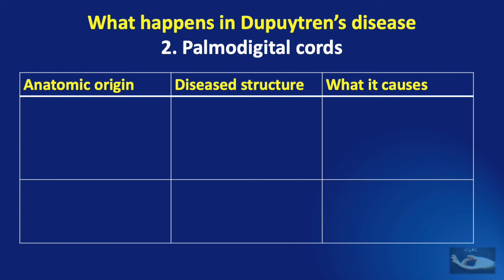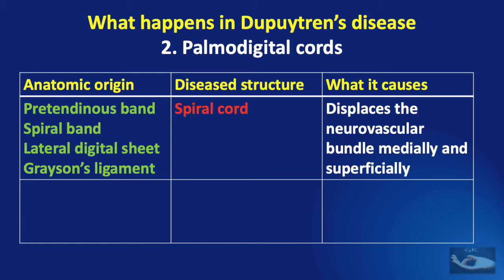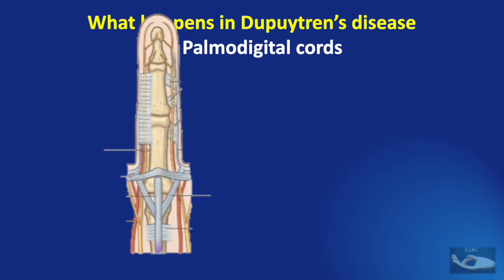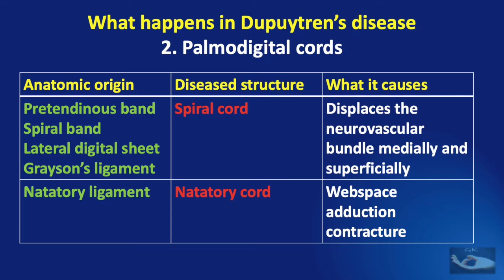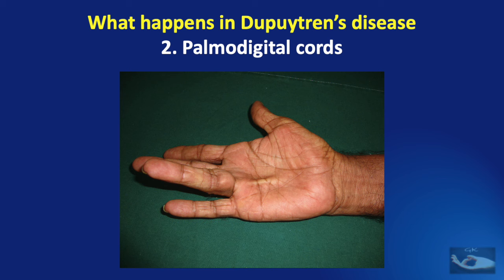Between the fingers and the palm, we have the palmo-digital cords. The pre-tendinous band, the spiral band, the lateral digital sheath, and the Grayson's ligament together form a continuum that becomes what is known as the spiral cord. This displaces the neurovascular bundle medially and superficially. This animation demonstrates the formation of the spiral cord, showing the involvement of the pre-tendinous band, the spiral band, the lateral digital sheath, and then the Grayson's ligament. Usually, the Cleland's ligament is not affected in Dupuytren's disease. The natatory ligament, when diseased, becomes the natatory cord, which causes web space adduction contracture in the fingers.